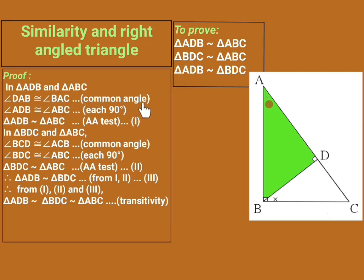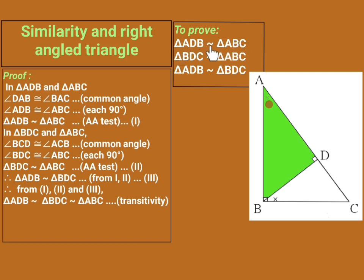The reason is: common angle. Now, angle ADB is 90 degrees, and for triangle ABC, angle ABC is also 90 degrees. Hence angle ADB is congruent to angle ABC, with reason: each 90 degrees. Since two pairs of corresponding angles are congruent, by the AA test, triangle ADB is similar to triangle ABC. This is statement number one.